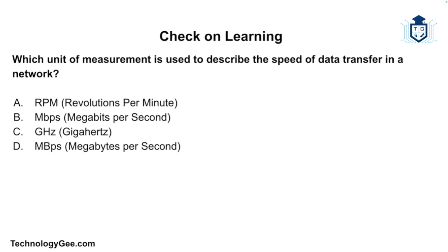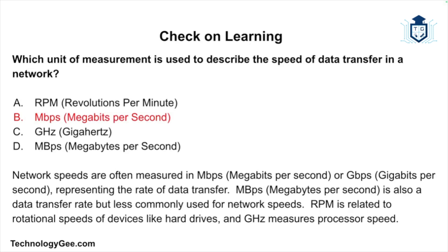Final question: which unit of measurement is used to describe the speed of data transfer in a network — revolutions per minute, megabits per second, gigahertz, or megabytes per second? The correct answer is megabits per second. Network speeds are often measured in megabits per second or gigabits per second, representing the rate of data transfer. Megabytes per second is also a data transfer rate but less commonly used for network speeds. RPM relates to rotational speeds of devices like hard drives, and gigahertz measures processor speed.